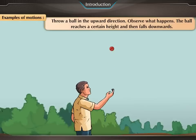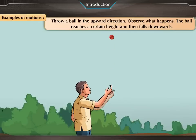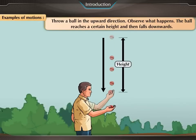Throw a ball in an upward direction. Observe what happens. The ball reaches a certain height and then falls downwards.